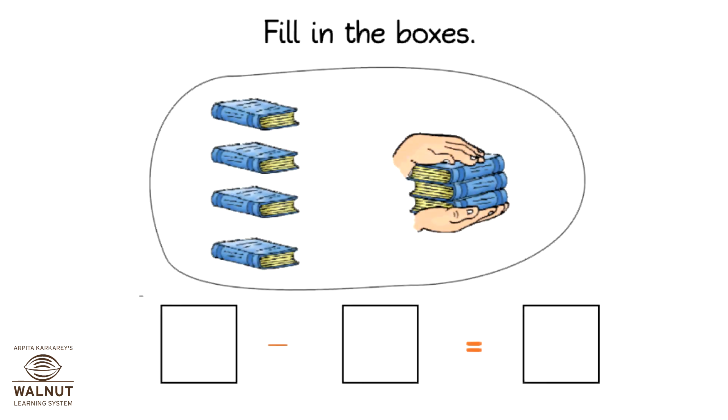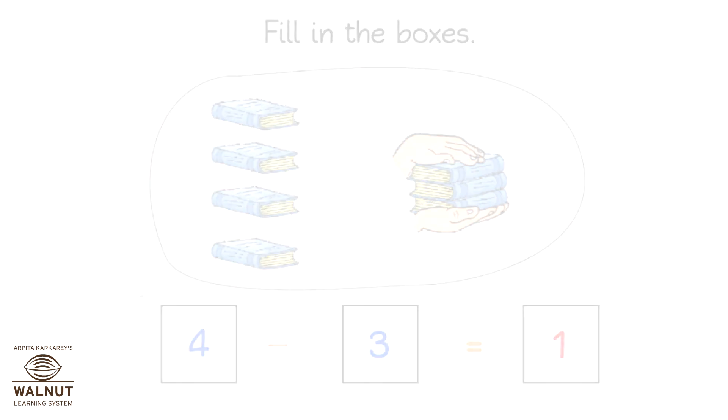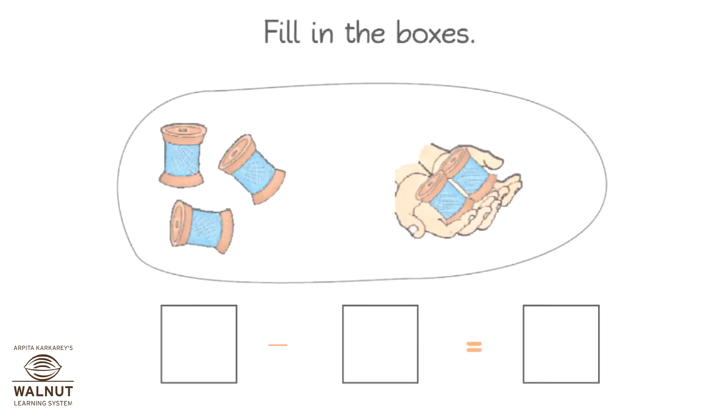Fill in the boxes. 4 minus 3 is equal to 1. 3 minus 2 is equal to 1.